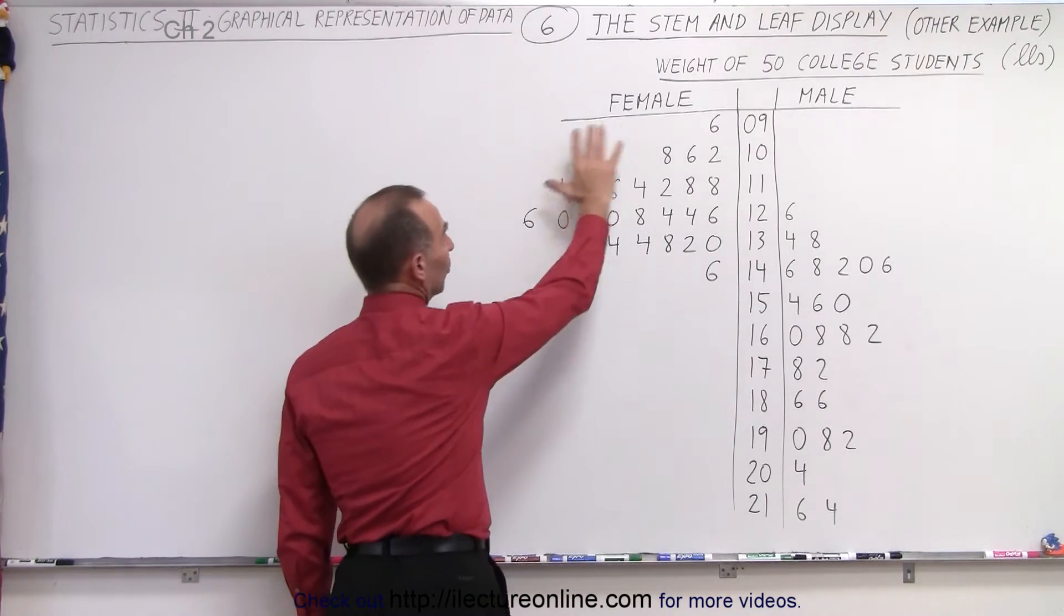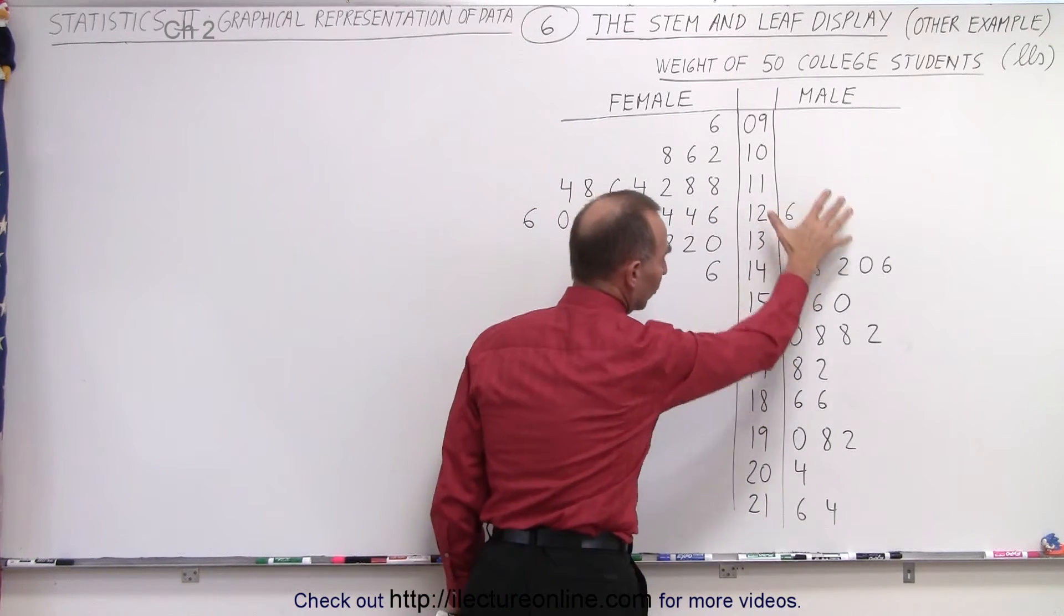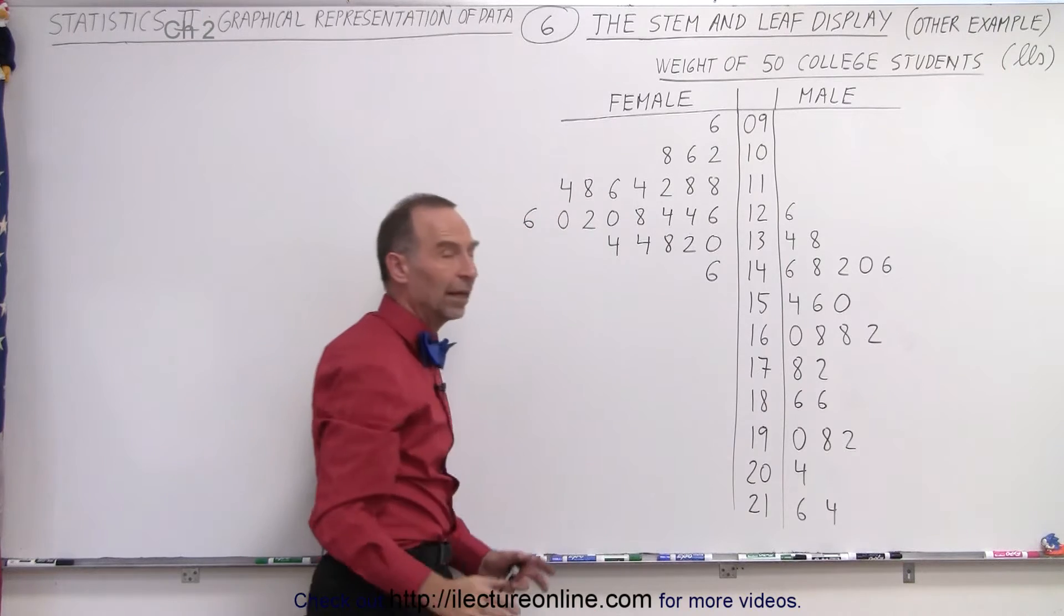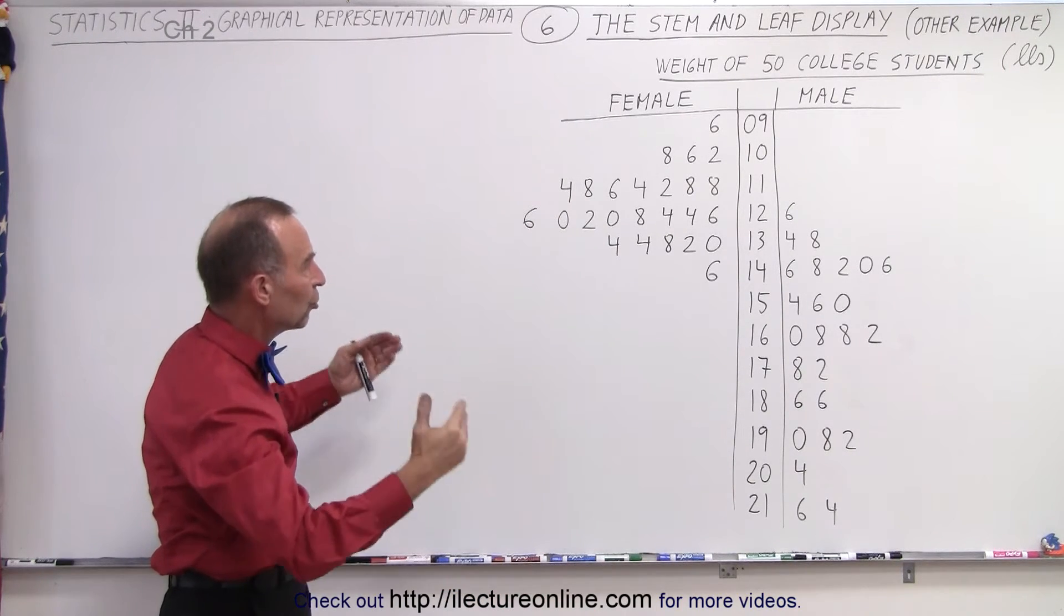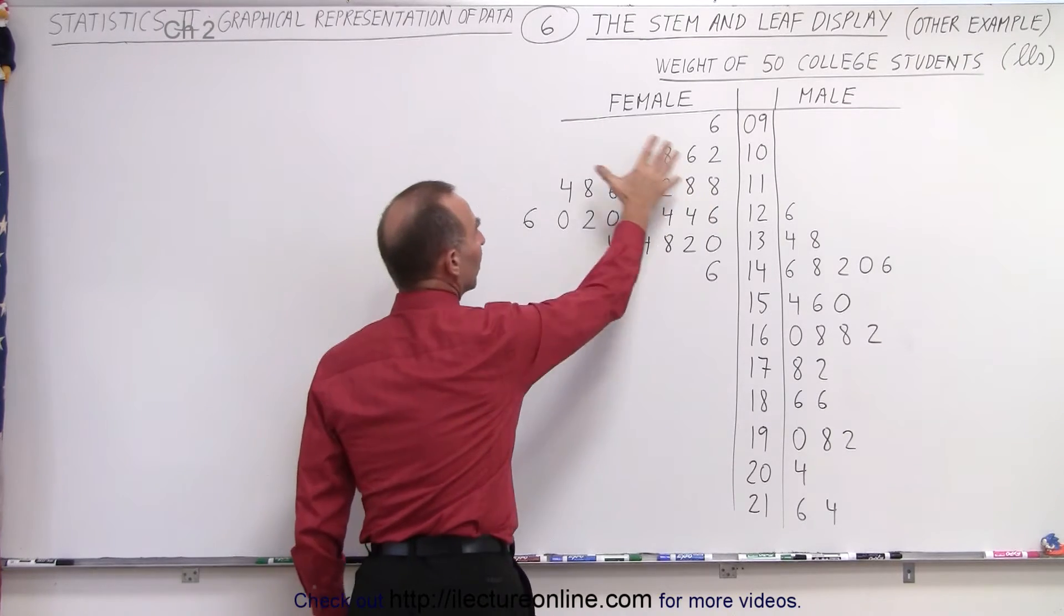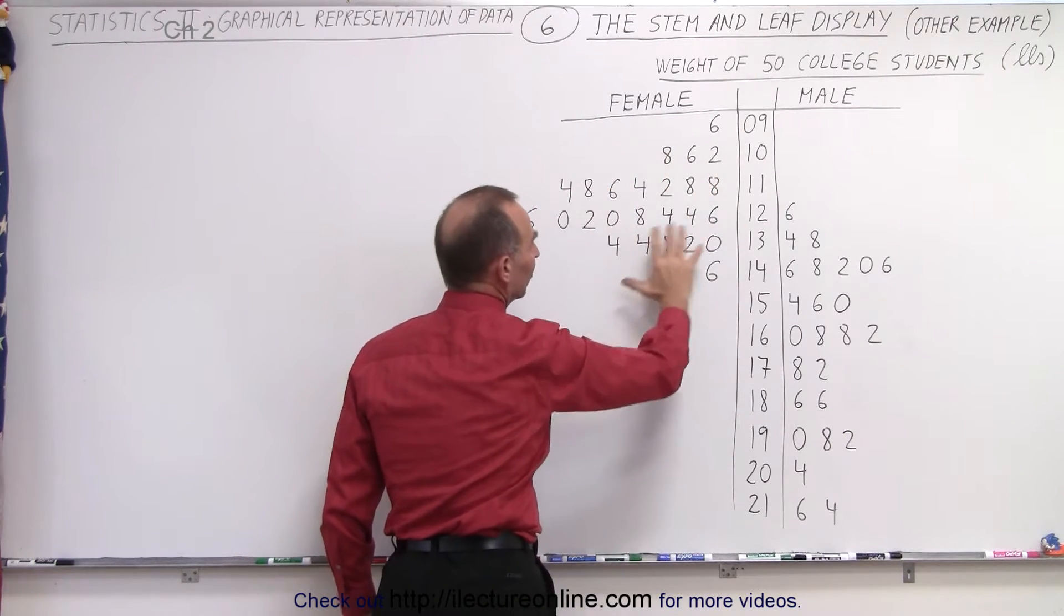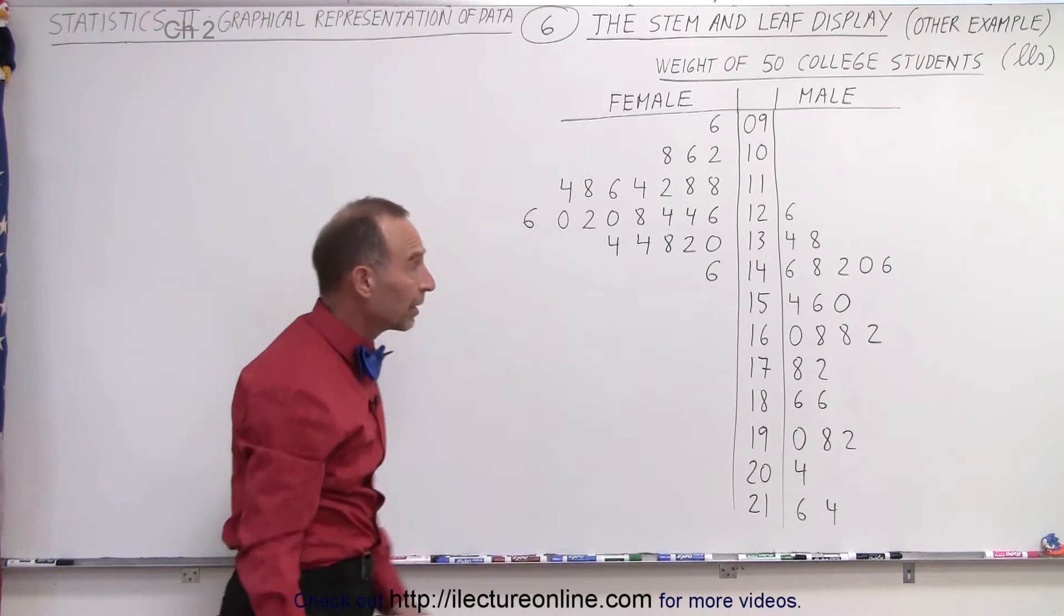Notice on the left we have the weight of 25 females, on the right we have the weight of 25 males. And so what does that display tell us? Well, first of all, it shows that the females in general are less heavy than the males, which is something you would expect.